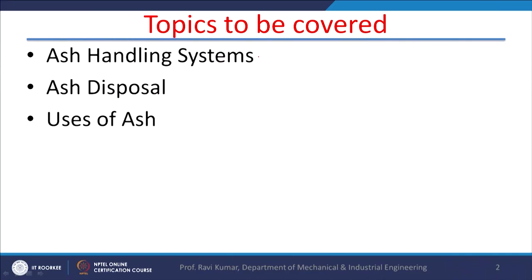Hello, I welcome you all in this course on Power Plant Engineering. Today, we will discuss ash handling. Ash is the unburned part of the coal which is used in power plants for heat generation. Topics to be covered in today's lecture are ash handling systems, ash disposal, and uses of ash.